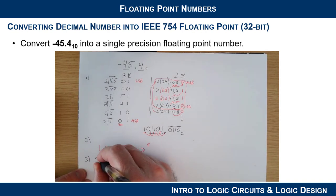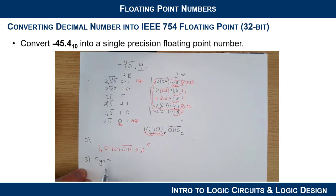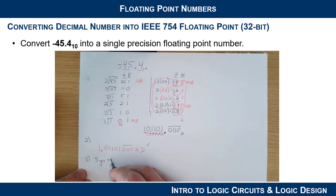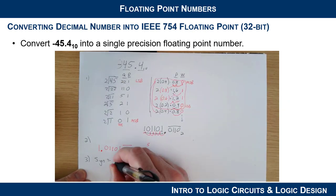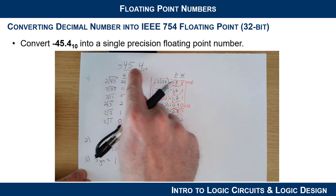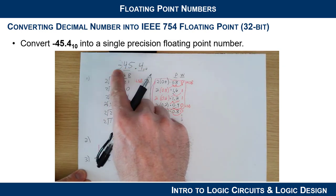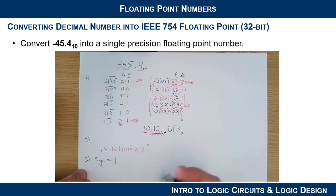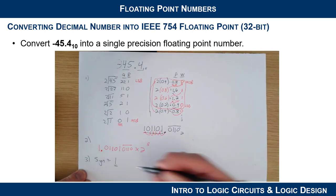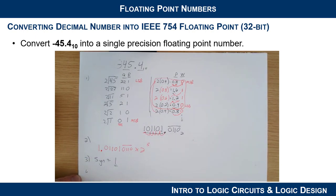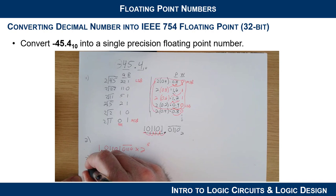Step three is the sign bit. Since the number is negative, the sign bit is 1. Remember, this is not two's complement encoding — we are using IEEE 754 encoding, so a 1 simply indicates negative.